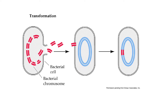In transformation, the donor bacterium is the heat-killed S strain — it died and released its DNA fragments into the environment. The recipient bacterium is the R strain. It is what's known as a competent bacterium, meaning it is able to take up DNA fragments from its environment. In this case, it picks up the gene for how to make a capsule and adds it into its own DNA.